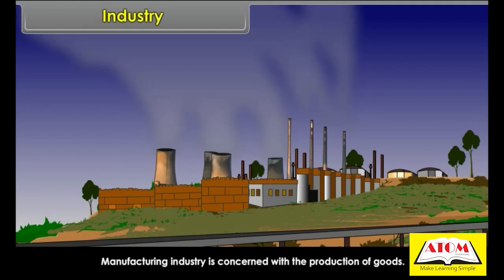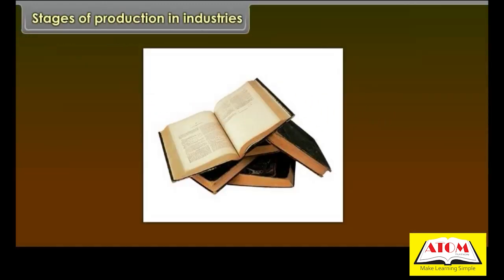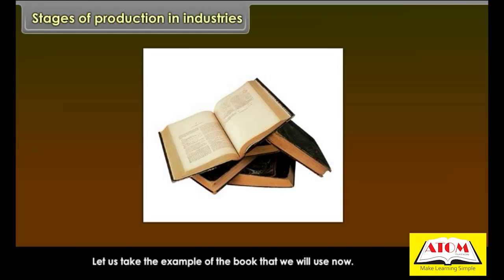Manufacturing industry is concerned with the production of goods. Most of the products that we use today have gone through various stages of production. Let us take the example of the book that we will use now.